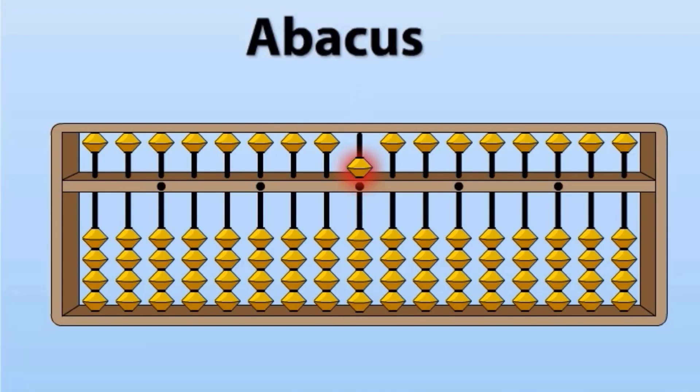If we want to make 6, upper bead and one lower bead makes 6. This is 7. Now this is 8. This is 9.